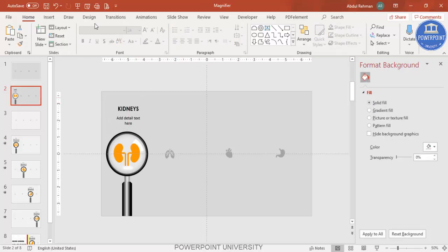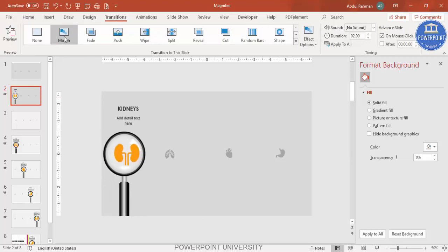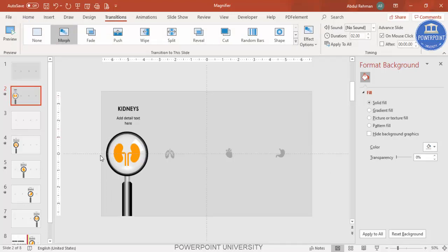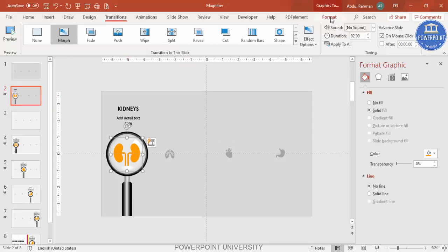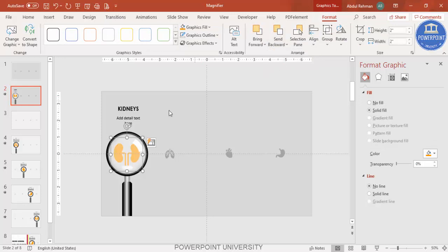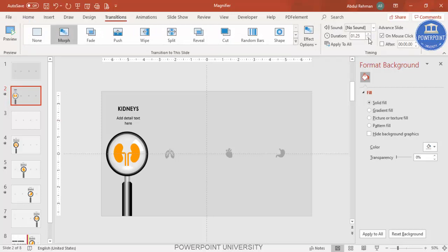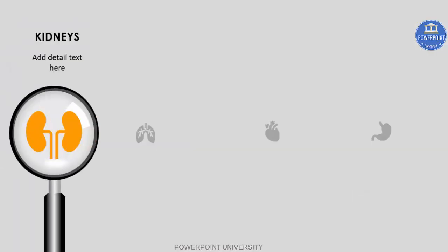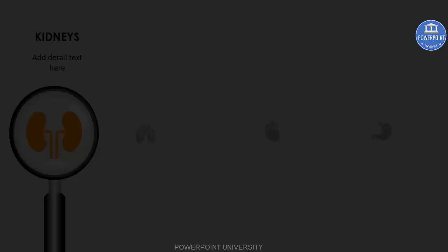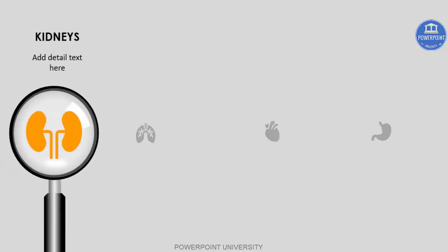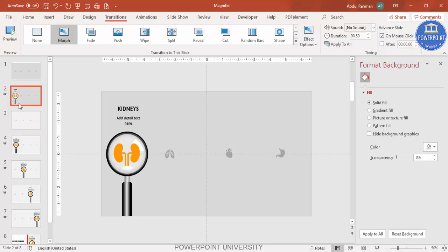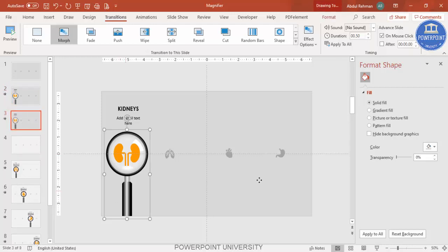This is the second slide. Go to Transitions and select Morph. Send the magnifier to back if needed. Then go to Transitions and reduce the duration — try 0.25 seconds, though 0.50 gives a smoother look. Play the slides to preview: clicking shows the magnifying glass animation moving to the icon.